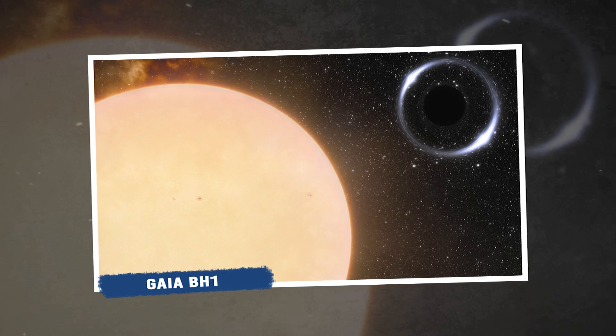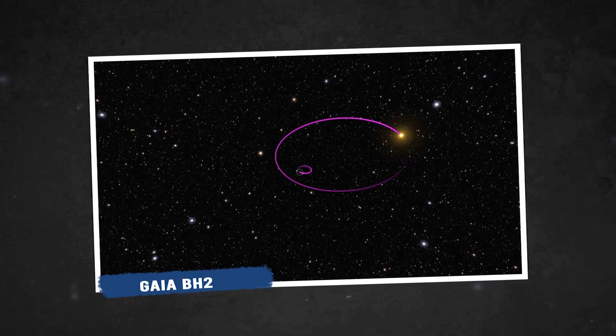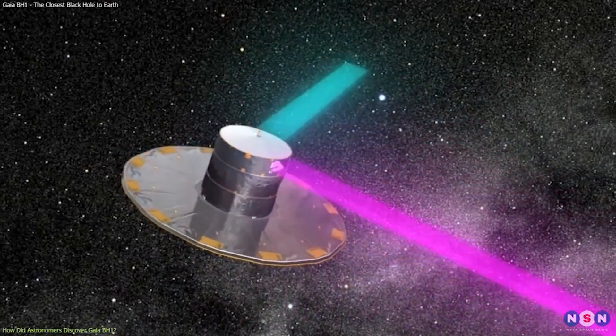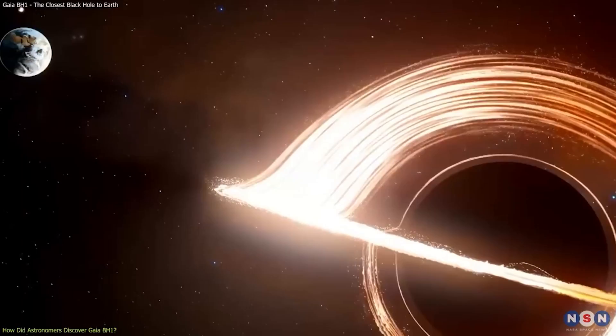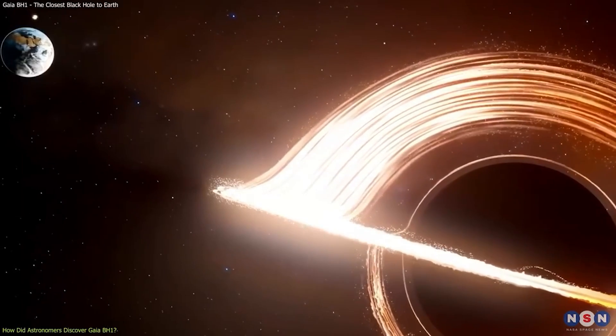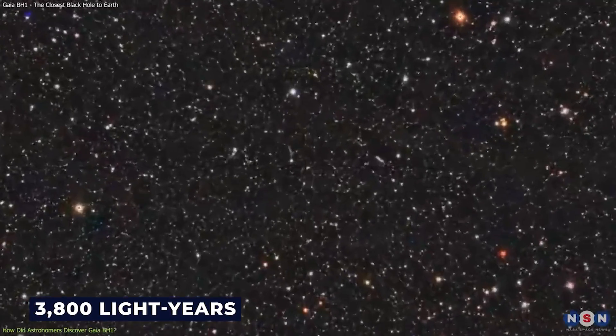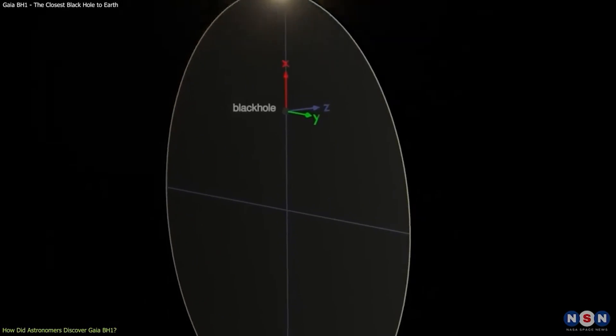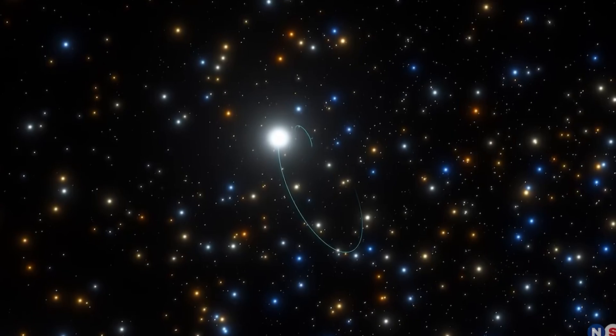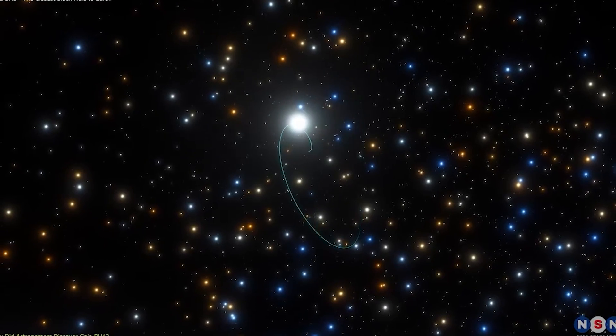Prior holders of the closest black hole to Earth record were Gaia BH1 and Gaia BH2, which, as their names imply, were uncovered with Gaia data just this year. The distance between Gaia BH1 and Earth is approximately 1,560 and 3,800 light years respectively. Cosmically speaking, the two black holes are rather close to Earth, yet they are still 10 to 20 times further distant than the Hyades cluster.